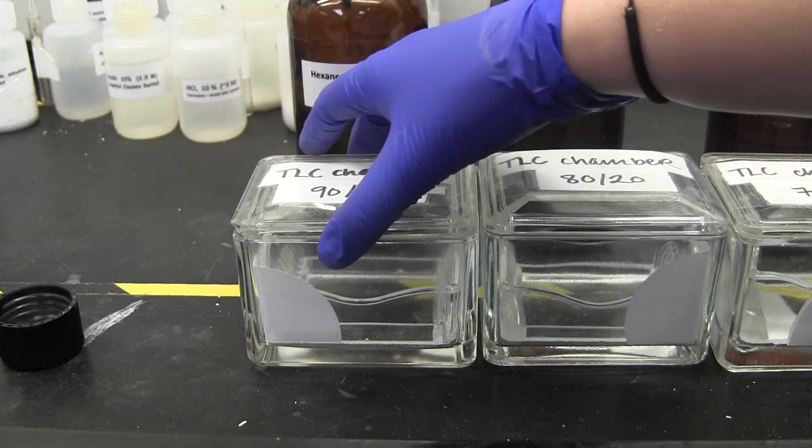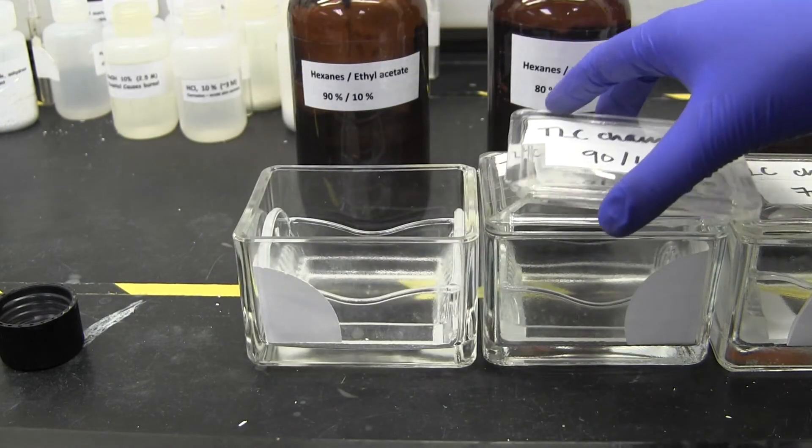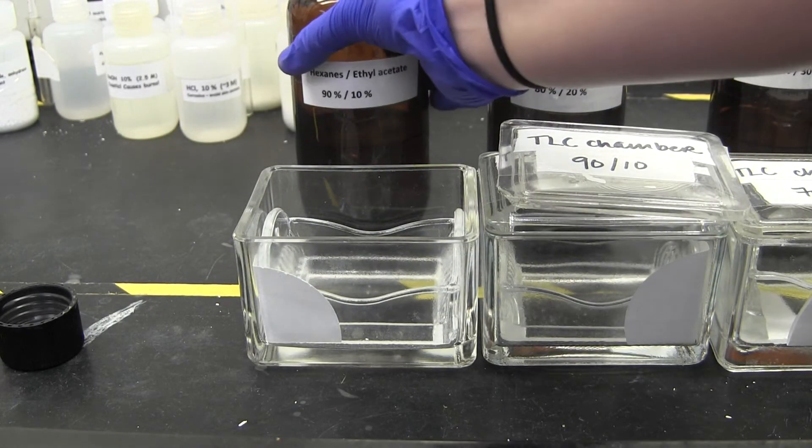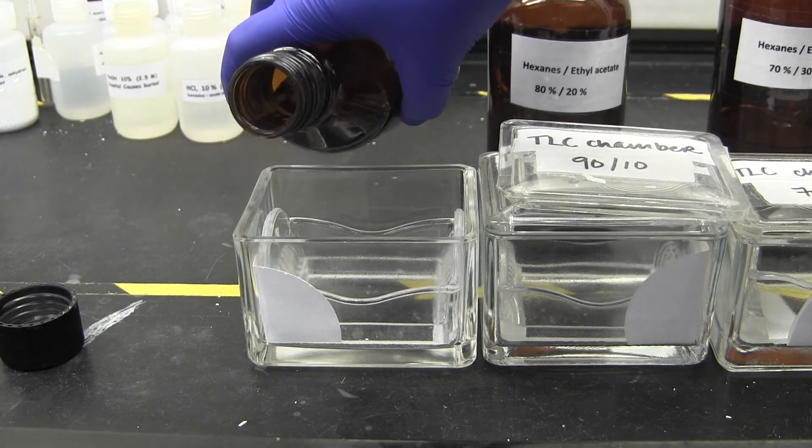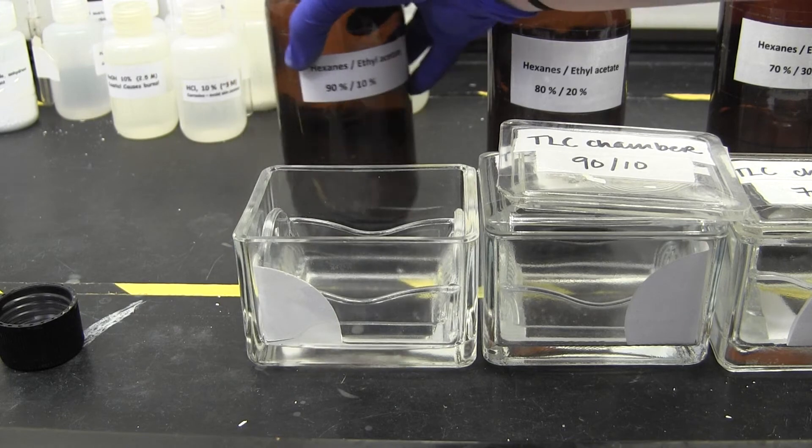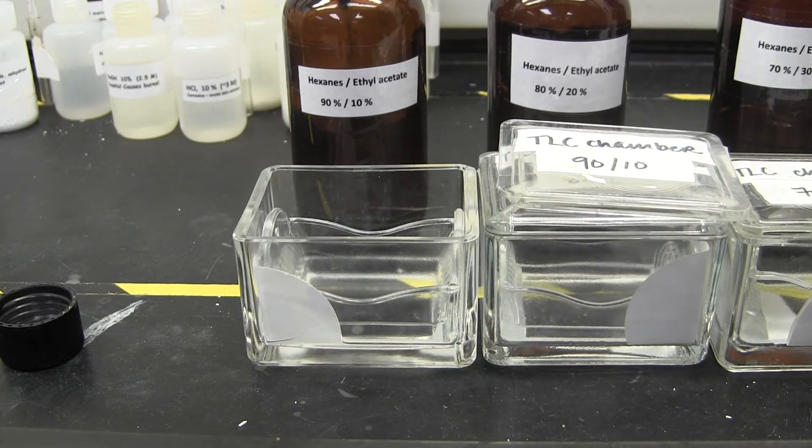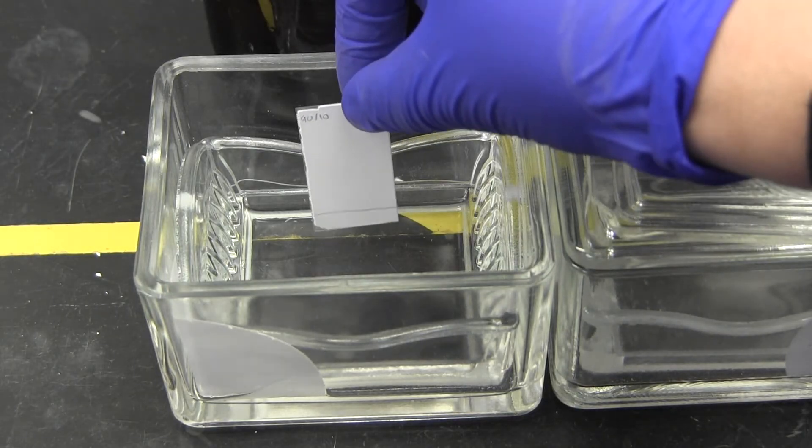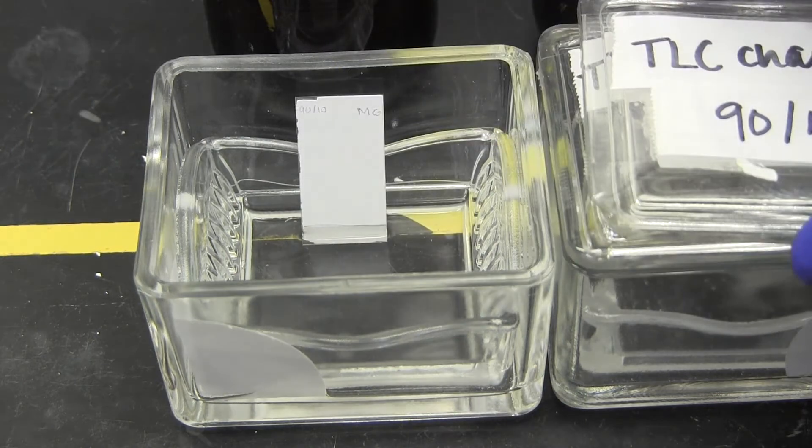Use the TLC chambers to test your solvent mixtures, and try to form a group to run several plates at once. The chambers are glass boxes, and use only the solvent that is labeled on the top. The solvents evaporate very quickly, so move fast and lean your TLC plate against the inside wall of the chamber, and replace the lid immediately.